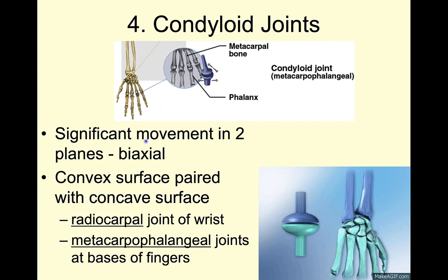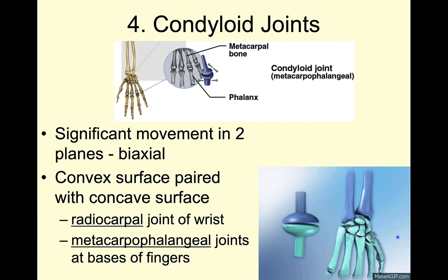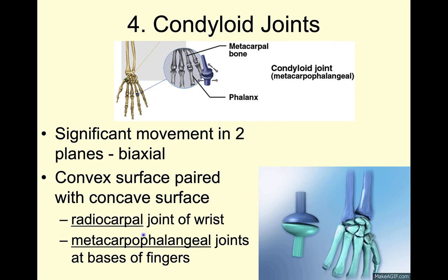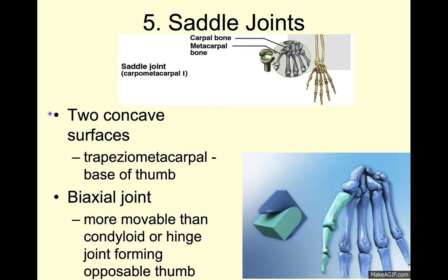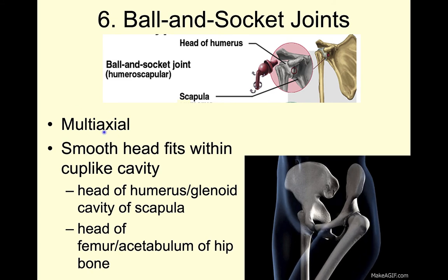Our condyloid joints are biaxial, so they allow for movement in two planes. We can see our wrist moving in abduction and adduction as well as flexion and extension — so our radiocarpal joints or metacarpophalangeal joints. Next we have our saddle joints, where we have two concave surfaces coming together — here the trapeziometacarpal joint at the base of our thumb. This is biaxial, offering a little bit more movement than our condyloid or hinge joints, and this helps to form our opposable thumbs.